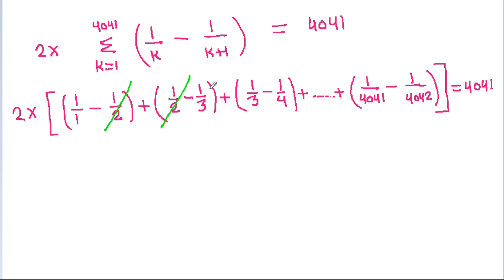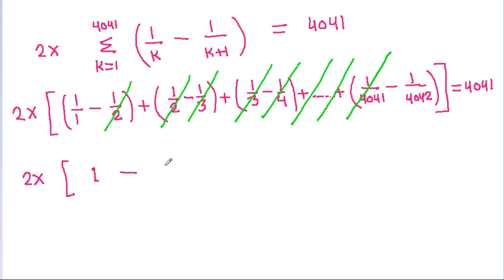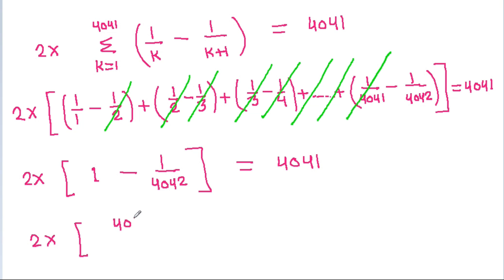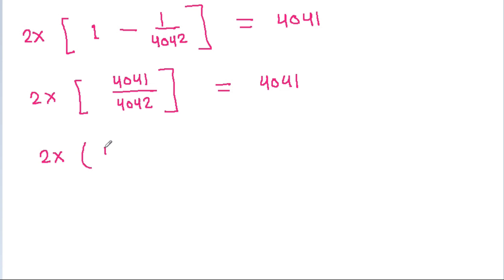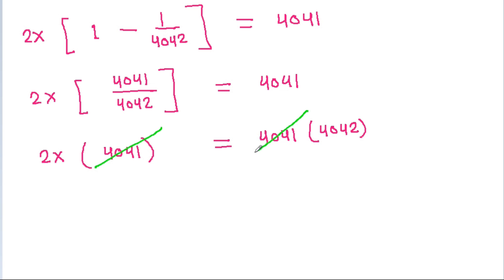When we cancel the intermediate terms — 1 by 2 cancels, 1 by 3 cancels, 1 by 4 cancels, and so on up to 1 by 4041 — we are left with 2x times 1 minus 1 by 4042, which equals 2x times 4041 by 4042, equal to 4041. The 4041 cancels from both sides, giving 2x equals 4042, so x equals 2021.